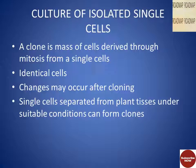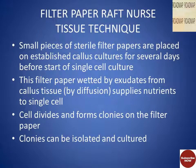Let's learn one by one in detail. In the filter paper raft nurse tissue technique, small pieces of sterile filter papers are placed on established callous cultures for several days before the start of single cell culture. The single cell culture is placed on the filter paper, which is wetted by exudates from callous tissue by diffusion, and it supplies the nutrients to the single cell. The cell then divides and forms colonies on the filter paper, which can be isolated and cultured.